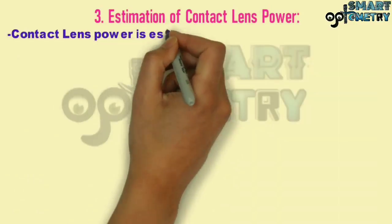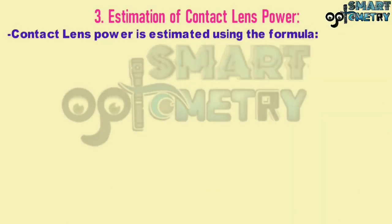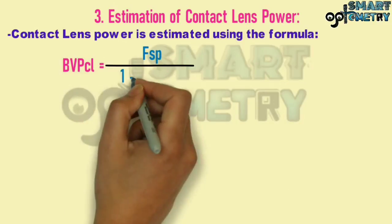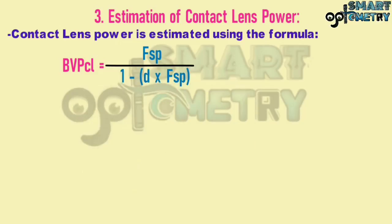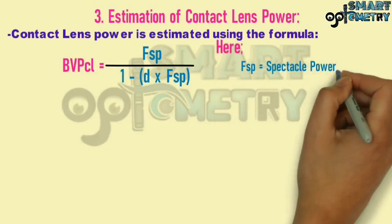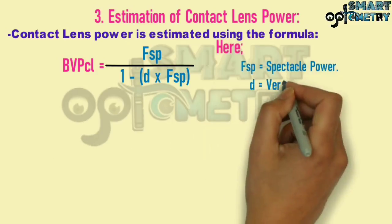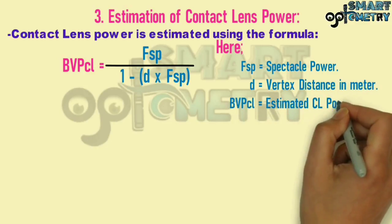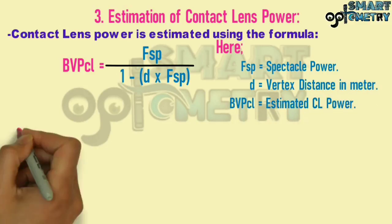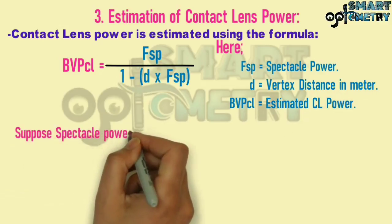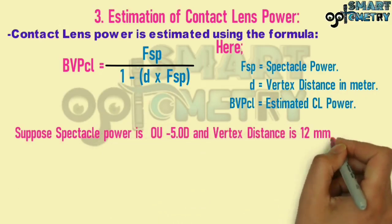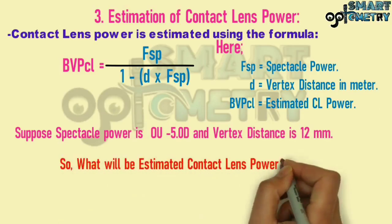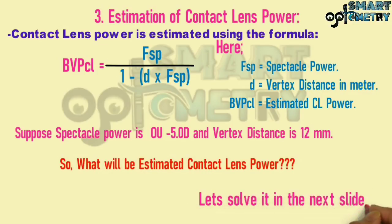Now let's start with estimation of contact lens power. Contact lens power is estimated using the formula: back vertex power of contact lens = FSP / (1 − d × FSP), where FSP is the spectacle power, d is the vertex distance in meters, and the result is the estimated contact lens power for the trial lens. Suppose spectacle power in both eyes is −5.00 D — let's solve for the estimated contact lens power.